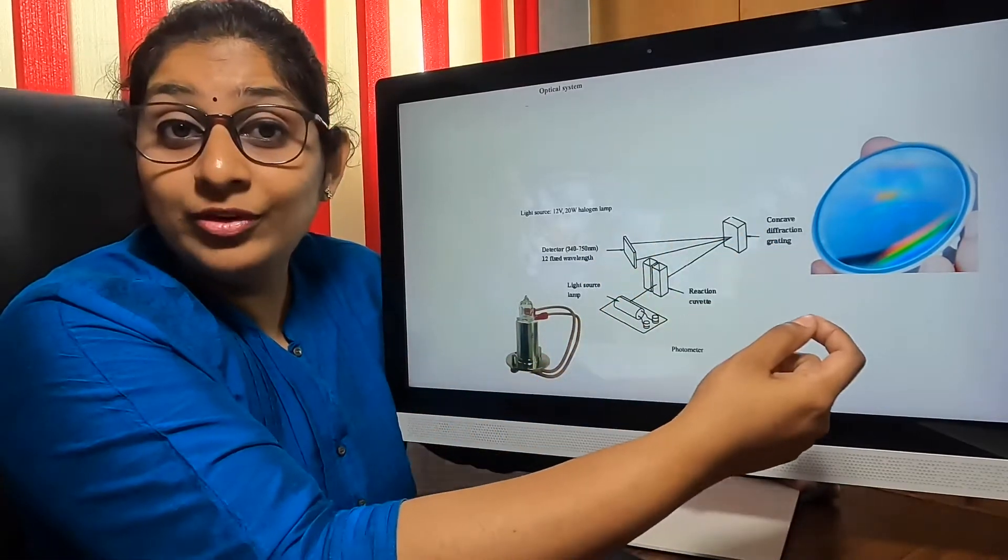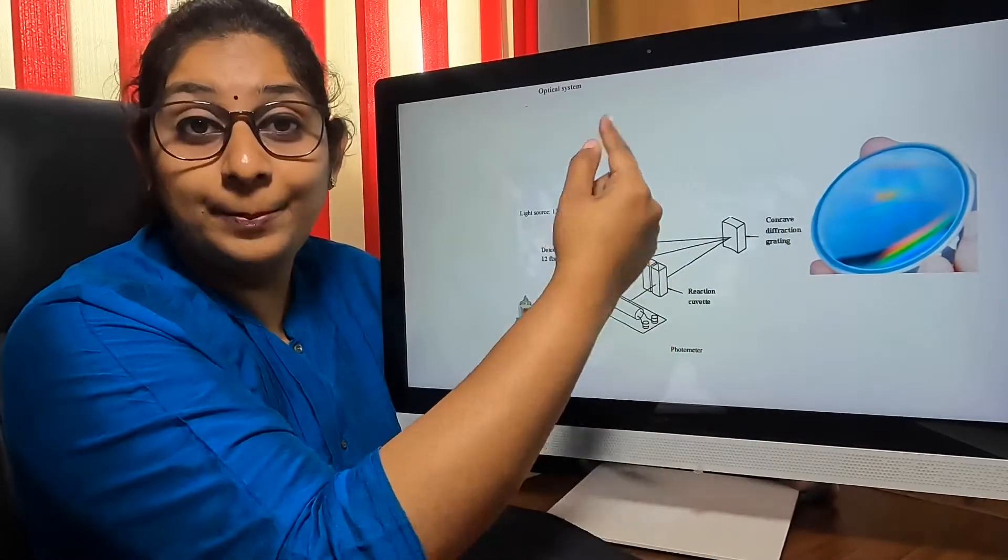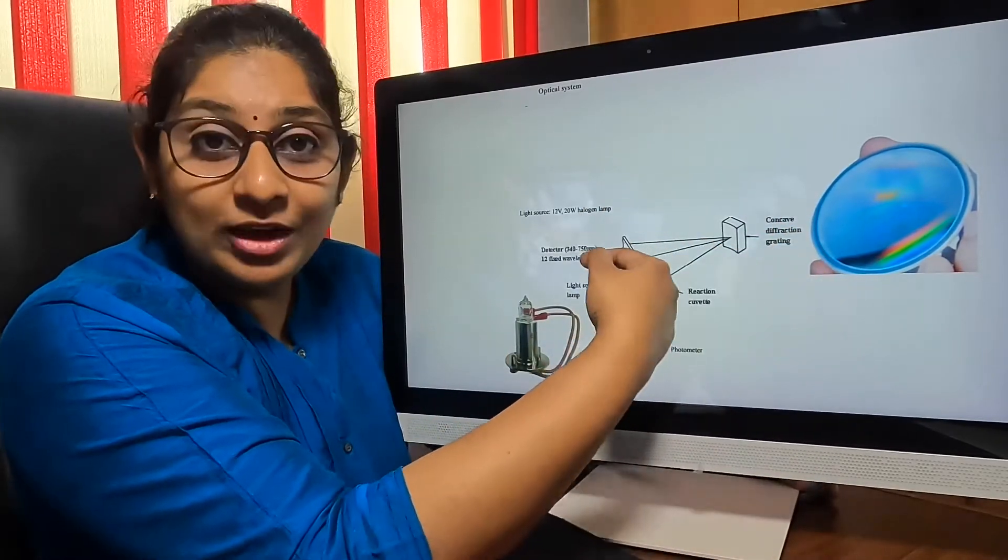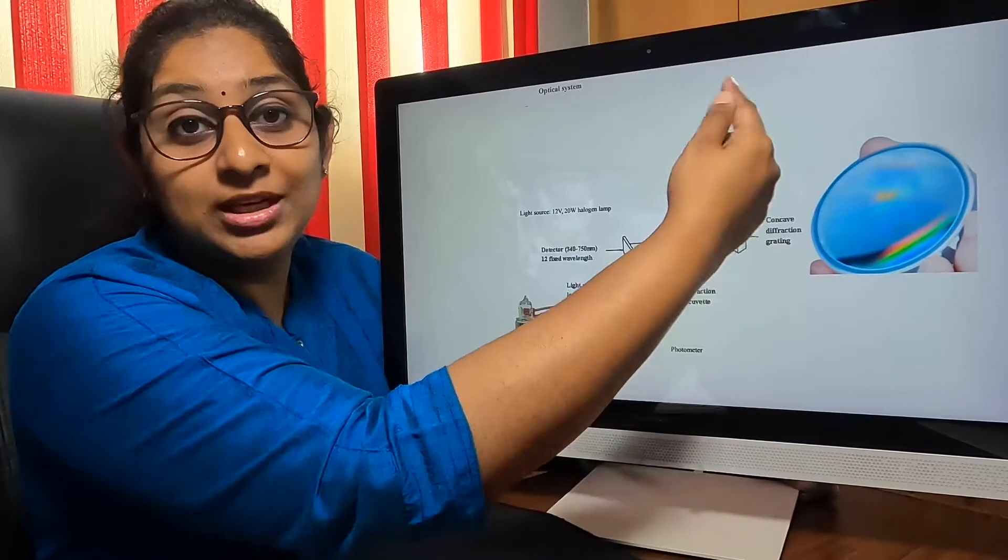Up to 750 nanometers, we will have 12 detectors placed and whatever wavelength the light is coming, it will be captured in that.